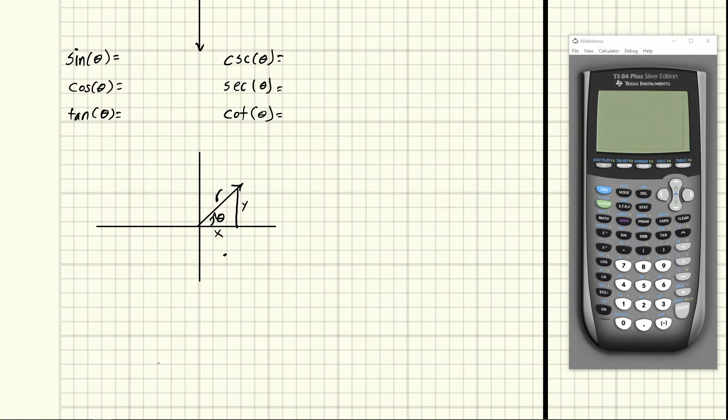And so we can call this side just y. So sine of theta, if you know SOHCAHTOA, that's opposite over hypotenuse. So the opposite is y of this and the hypotenuse is r. Cosine of theta is going to be the adjacent over the hypotenuse or x over r. And tangent of theta is going to be opposite over adjacent or y over x. And knowing these and their reciprocals will give us all these different definitions. And so we're going to use this information to do this.